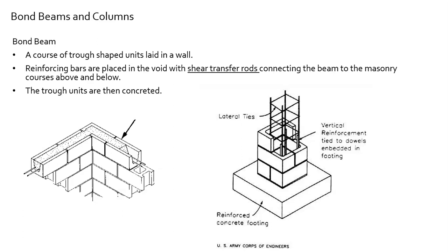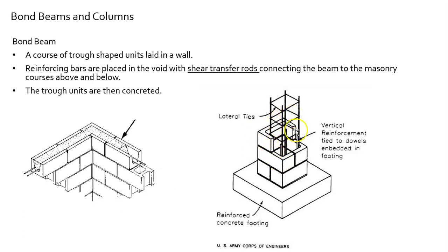Moving on to bond beams and columns. A bond beam is a course of trough-shaped units laid in a wall. Reinforcement bars are placed in the void, with shear transfer rods connecting the beam to the masonry courses below. The trough units are then filled with grout. Similarly, masonry columns use horseshoe-shaped pieces with vertical reinforcement filled with grout, working on the same principle.